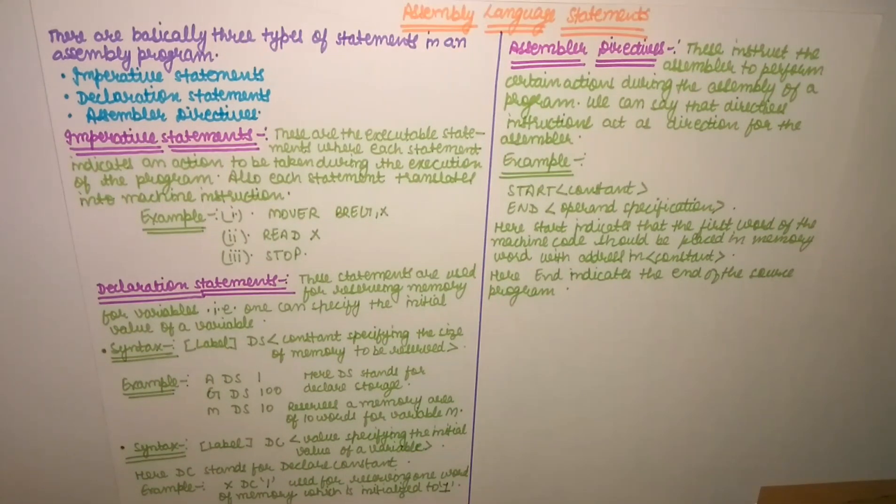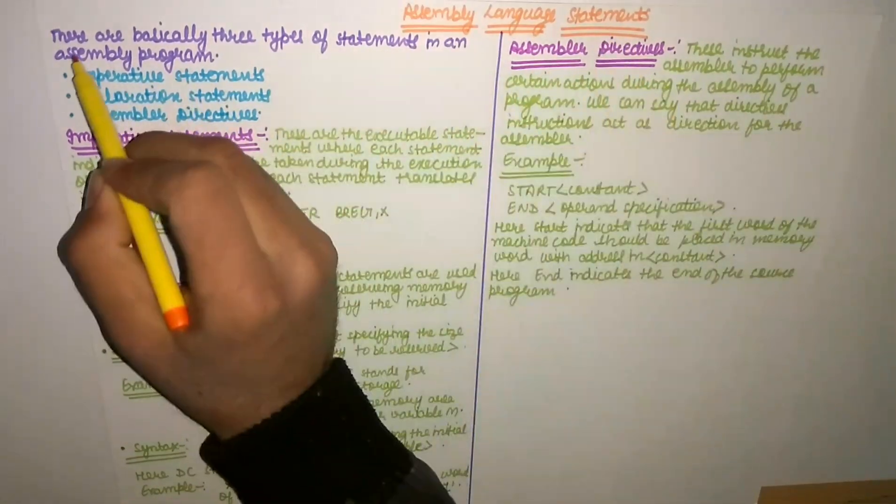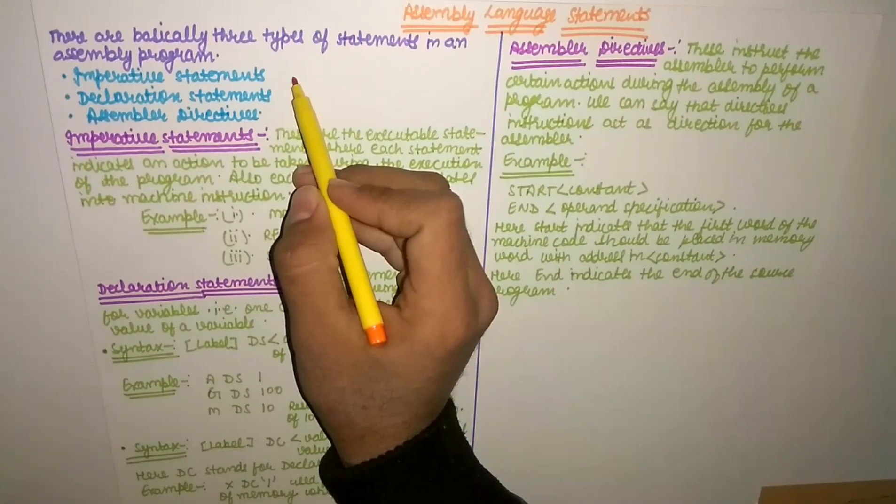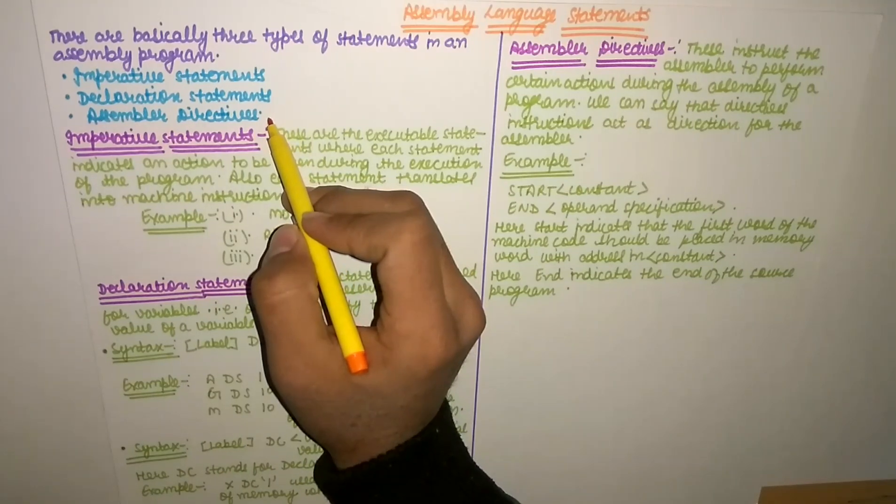Hello everyone. In this video, we will learn about assembly language statements. There are basically three types of assembly language statements in an assembly program. They are imperative statements, declaration statements, and assembler directives.